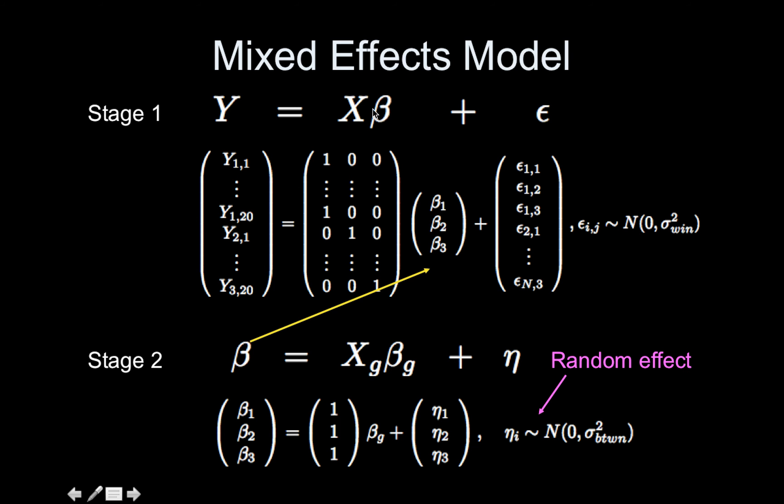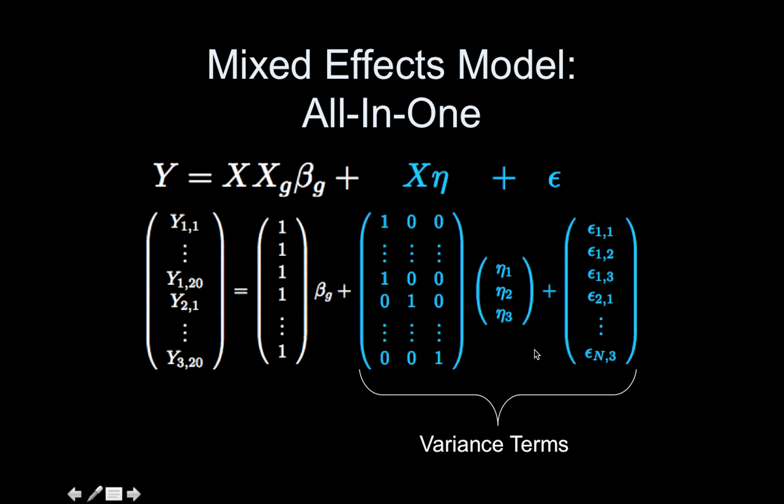So I'm going to replace this beta up here with this big expression right here. And that's the all-in-one mixed effects model. We have X times X_g beta_g. So we're back to the thing that looked like our original fixed effects model, but the fancy part is that we have these two variance terms.